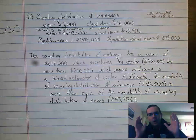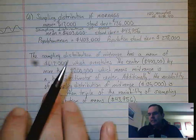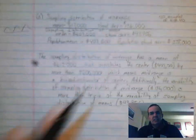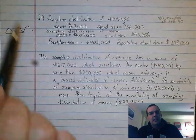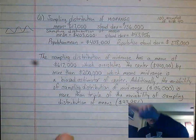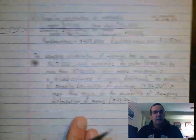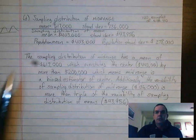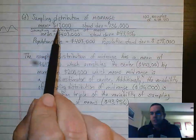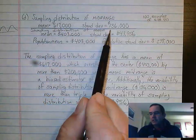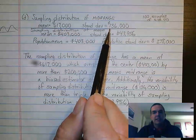So they did that a hundred times and what happened is they got a curve that looked something like this over here, kind of that wavy curve. There was like a multi-modality to it and what they told us was the mean of that distribution was $617,000. The standard deviation was $136,000.